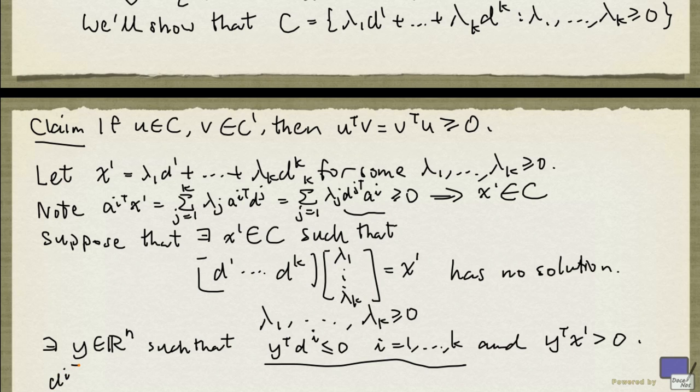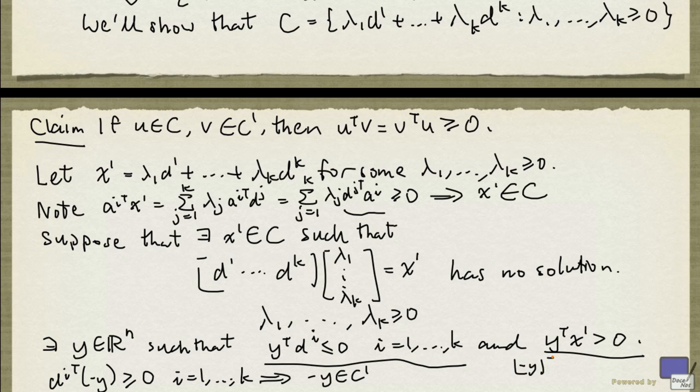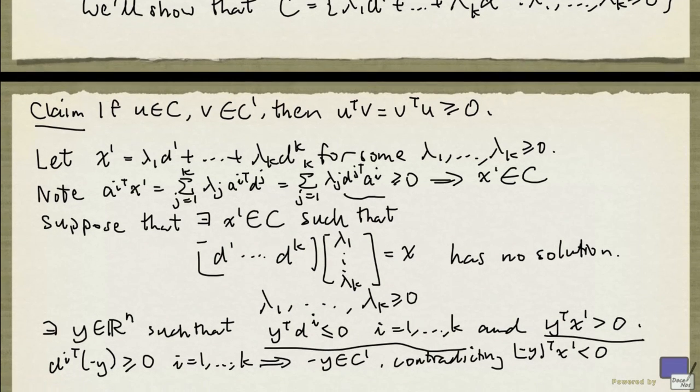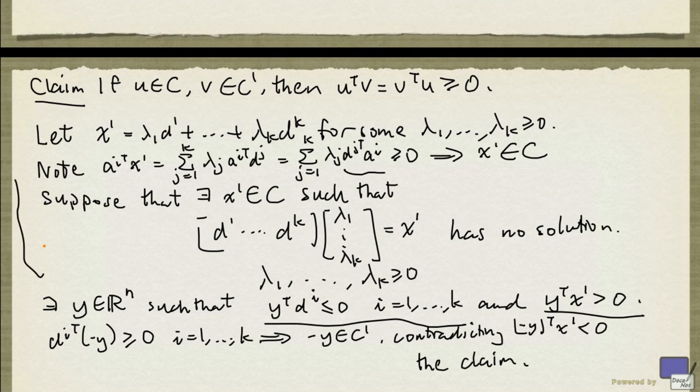Now from this, we see that (d^i)^T times (-y) ≥ 0 for i from 1 up to k. And so -y is going to be in C'. But this here says -y^T times x' < 0. But x' is in C. So this contradicts our claim here. And so this supposition is false. And that completes the proof.